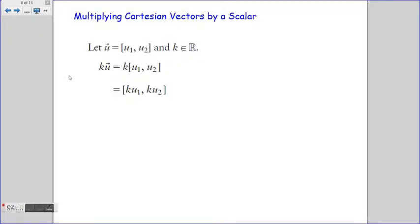Moving on to multiplying Cartesian vectors by a scalar: if u is the vector with components u1 and u2, and k belongs to the set of real numbers, we can say that k times vector u equals k times each of the components within that vector. Therefore, k·[u1, u2] = [ku1, ku2].